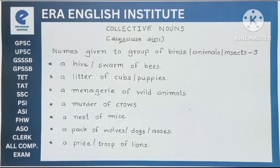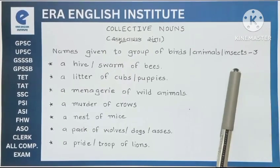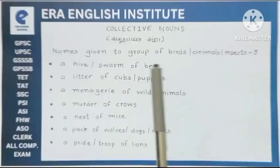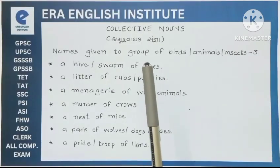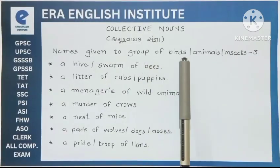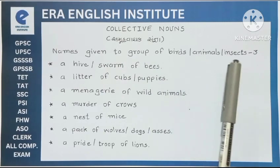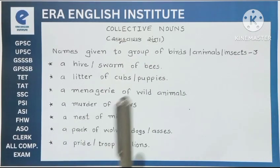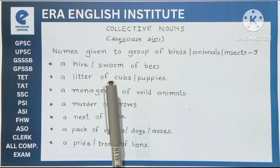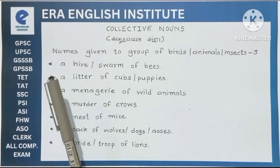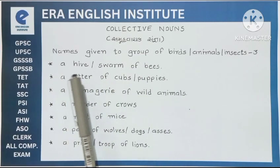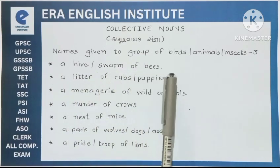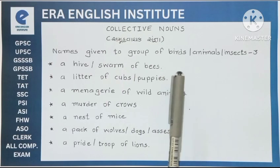Students, now we are going to start the third part of collective nouns about birds, animals and insects. Start with the first collective noun: a hive or a swarm of bees.